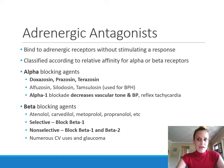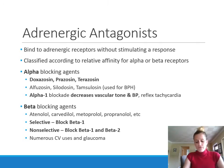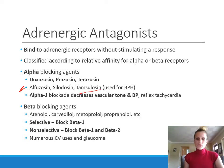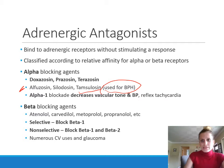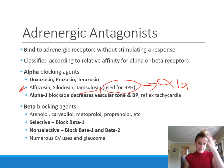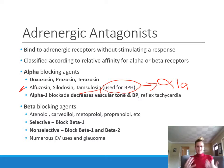The alpha blocking agents include drugs like doxazosin, prazosin, and terazosin, used primarily for cardiovascular conditions like hypertension. Alfuzosin, silodosin, and tamsulosin are used for BPH, not cardiovascular conditions, because they are specific for alpha-1A receptors found in the bladder and prostate. This causes relaxation of the bladder and prostate, increasing urinary flow and decreasing the hesitancy and weak stream associated with BPH.